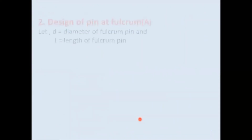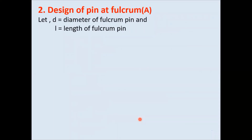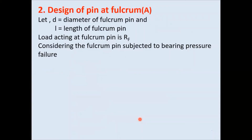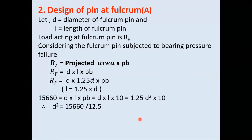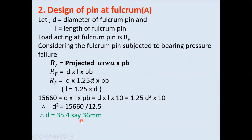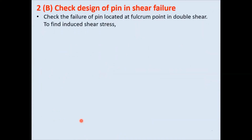Step 2 is design of pin at fulcrum. Considering bearing pressure failure: Rf = projected area × bearing pressure. We have values of Rf and Pb, and use L = 1.25d. Substituting all values, the diameter of the pin comes to 35.4 mm, so we take 36 mm. The length is 25% extra, giving L = 45 mm. Now we check the design of pin for double shear failure.